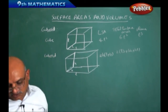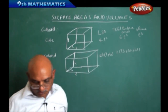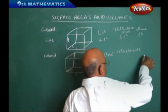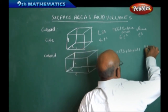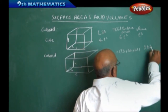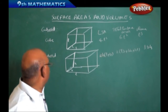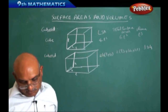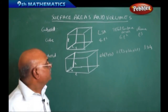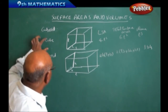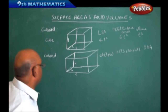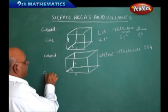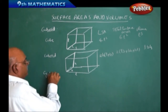Now, the volume of the cuboid is length into breadth into height. In the same manner, beyond this, if we take a cylinder, we are going to look at that.